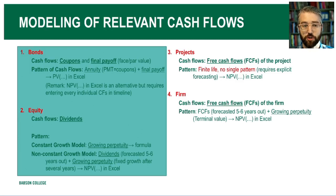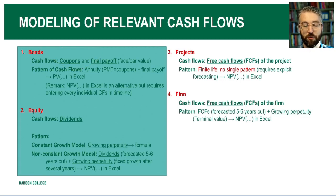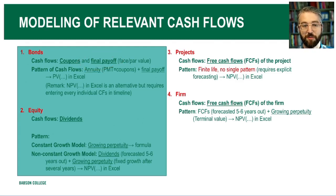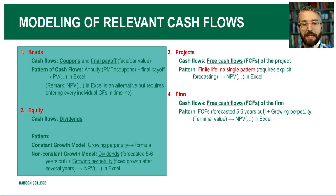On the bond side, the key cash flows that an investor should expect to receive—assuming the investor holds the bond all the way until the end of its lifetime and the firm makes all promised payments—are two kinds. The first we call coupons: payments the investor receives along the way, typically every six months or twice a year for corporate debt. In addition, when the bond matures, the investor receives a final payoff called the face value or par value. You can think of this like an interest-only loan: coupons reflect interest received for having lent the money, and the final par value represents repayment of principal at the end.